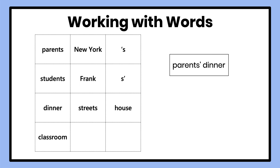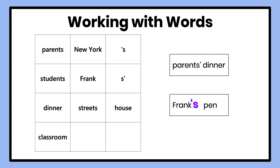Let's learn more about how to make possessives. If I have Frank and pen, but I want it to be a possessive where Frank owns the pen, I'm going to add an apostrophe S — so that it shows that it's Frank's pen and it belongs to him. I add the apostrophe S and not the S apostrophe like I did in parents' dinner, because Frank ends in a K, not in an S.